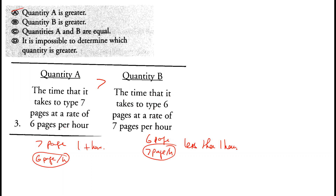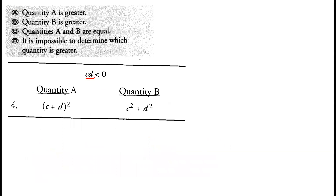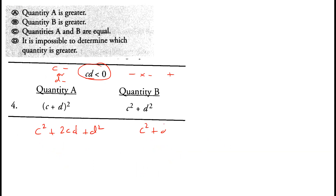CD is less than zero, meaning either c or d is negative, but not both (since negative times negative is positive). Quantity A is (c+d)², which expands to c² + 2cd + d², and quantity B is c² + d². You might think quantity A is greater because of the 2cd term, but we need to understand that one of them is negative.